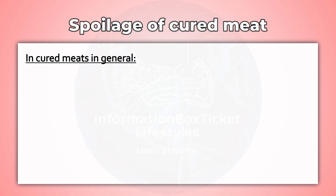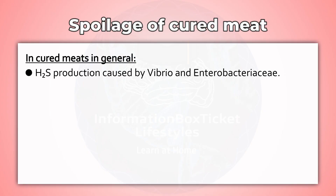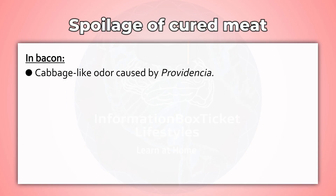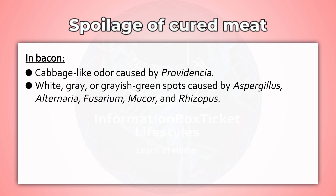In cured meats in general, H2S production is caused by Vibrio and Enterobacteriaceae. In bacon, cabbage-like odor is caused by Providencia, and white, gray, or grayish-green spots are caused by Aspergillus, Alternaria, Fusarium, Mucor, and Rhizopus.